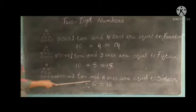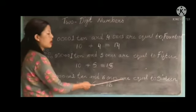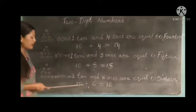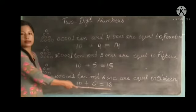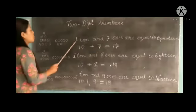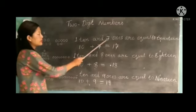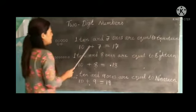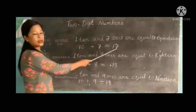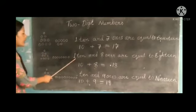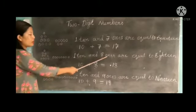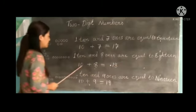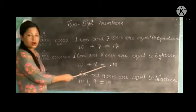1 ten and 6 ones are equal to 16. 10 plus 6 are 16. 10 plus 7 are 17. 1 ten and 8 ones are equal to 18. 10 plus 8 are 18.